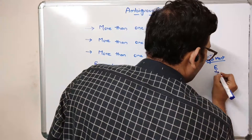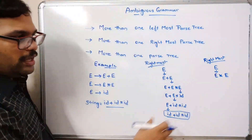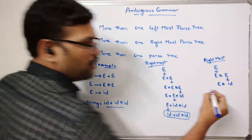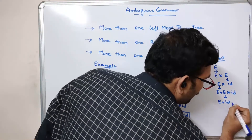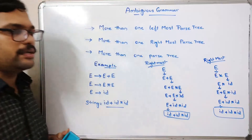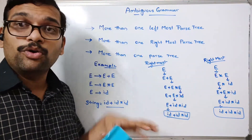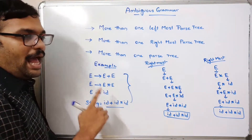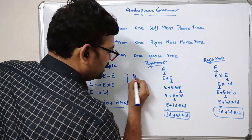Second rightmost derivation: Start with E → E * E. Replace rightmost E with id: E * id. Replace E with E + E: E + E * id. Replace rightmost E with id: E + id * id. Replace E with E + E: E + E + id * id. Substituting id gives: id + id + id * id — the same required string. Since the same string is derived with more than one rightmost derivation, this grammar is ambiguous.